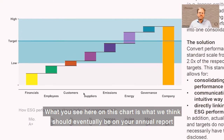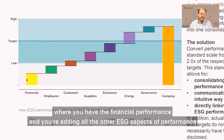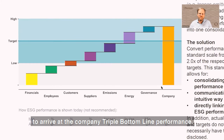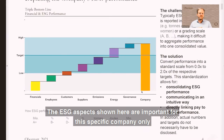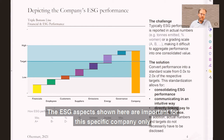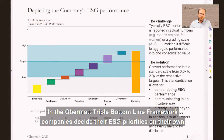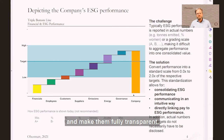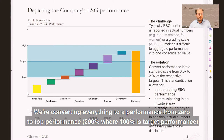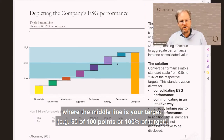What you see here on this chart is what we think should eventually be in your annual report, where you have a financial performance and you're adding all the other aspects of performance to arrive at a company performance. We decided that these are aspects that we think are important for this company, but these aspects are actually individual. Every company decides on their own what their priorities are, but they use the method to arrive at the same overall company performance. We're converting everything to a performance from zero to top performance, where the middle line is your target.